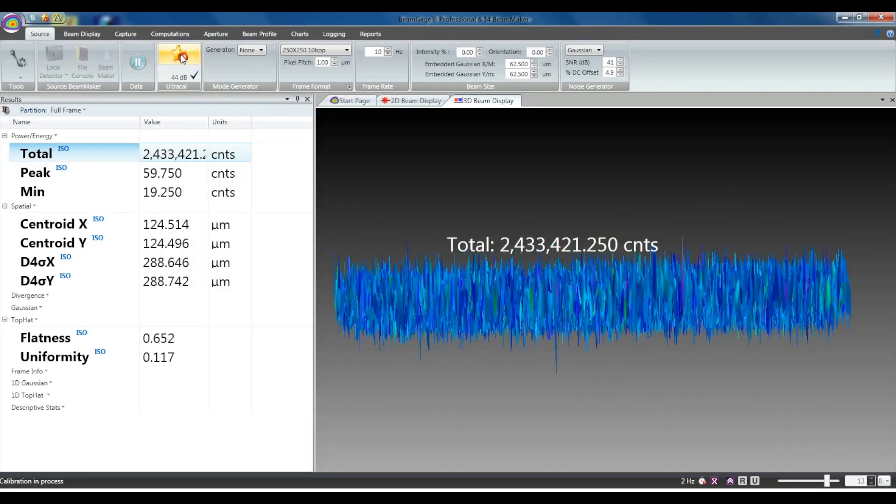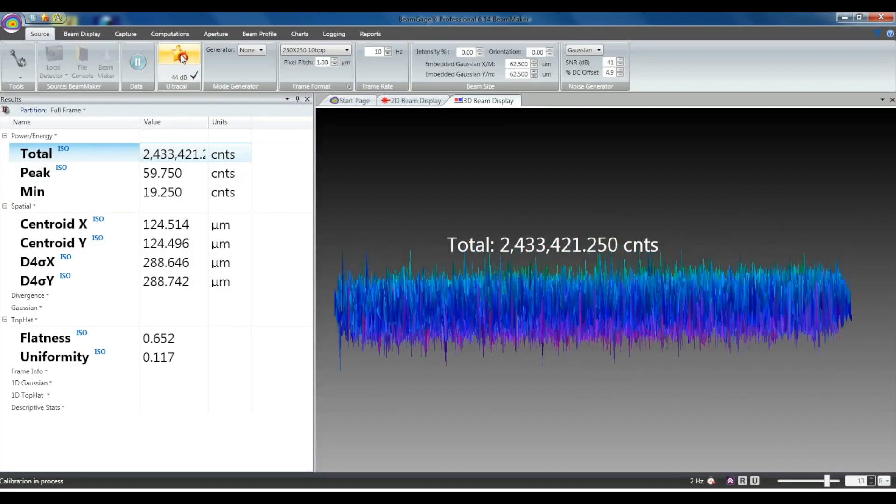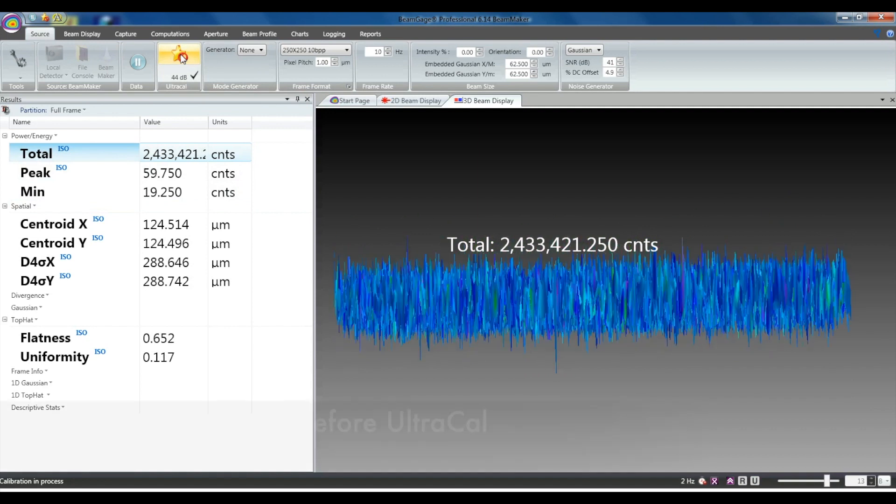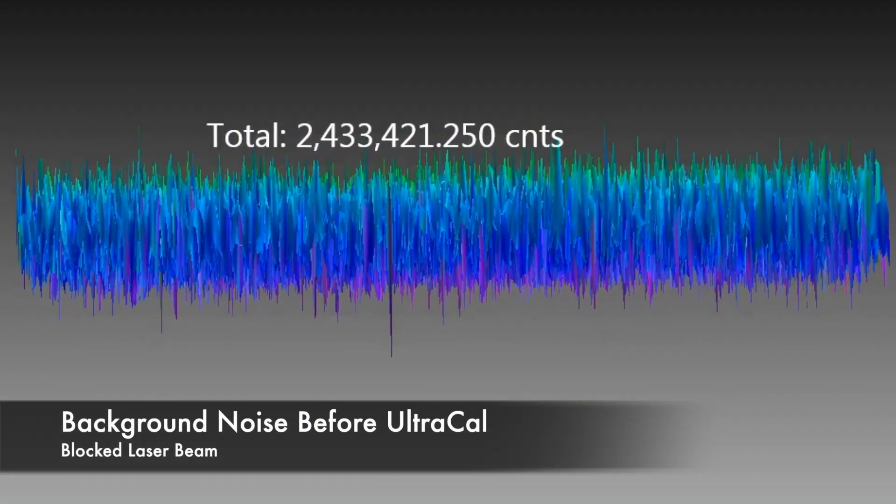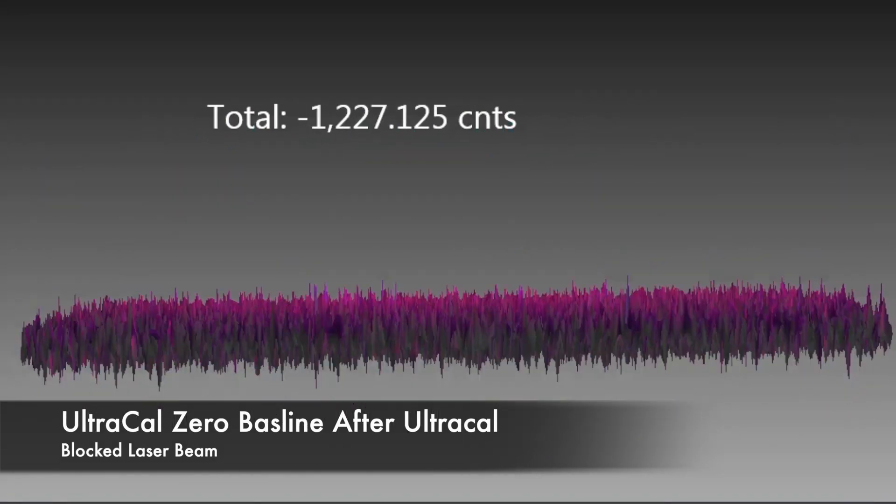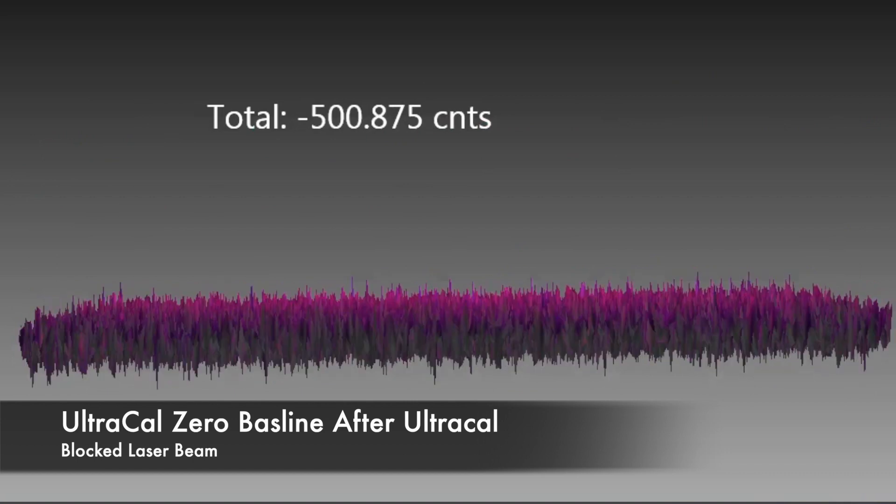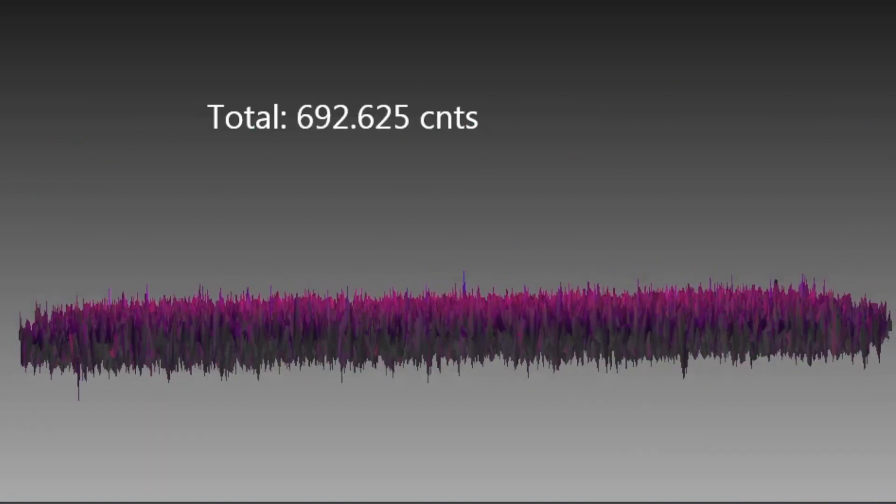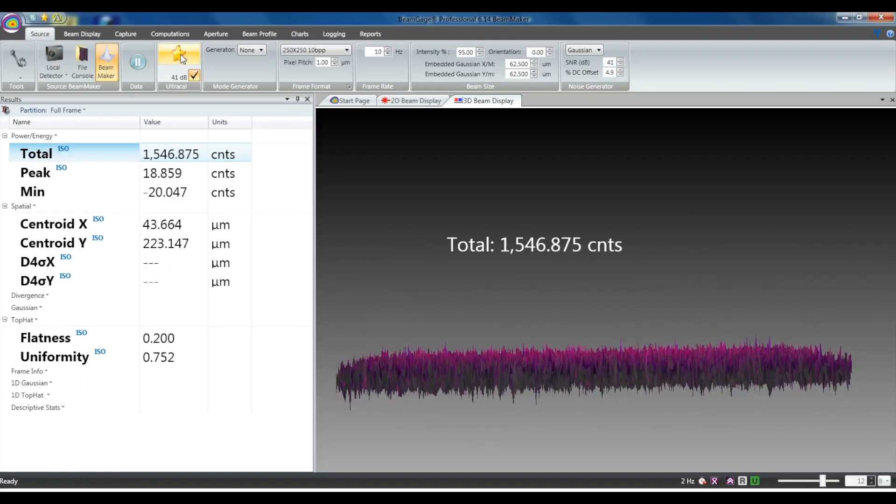This is because UltraCal balances the noise so there is as much negative noise as there is positive noise. If summed, an UltraCal frame with no signal, all the pixel values will be equal to or very close to zero. Because of this, we can differentiate between the laser beam and the camera noise. That is the magic of UltraCal.